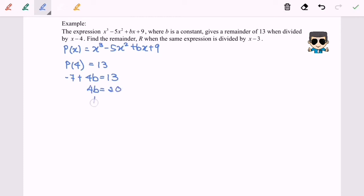And finally b equals to 5. So again, as I mentioned earlier, we are going to substitute the value into the expression. So P(x) will be equals to x cubed minus 5x squared plus 5x plus 9. So that is our expression.